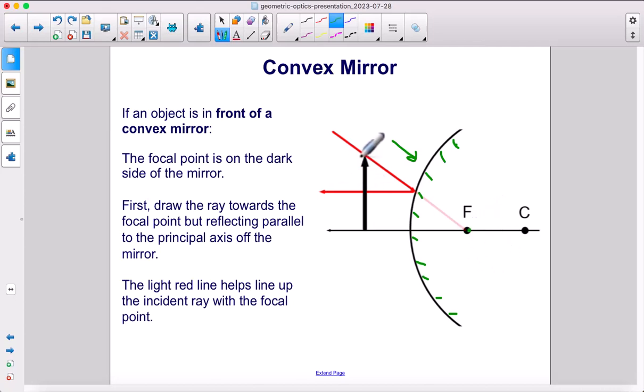The first thing we're going to do is draw a ray that goes towards the focal point. But as soon as it hits the mirror, it is going to bounce off parallel to the principal axis.